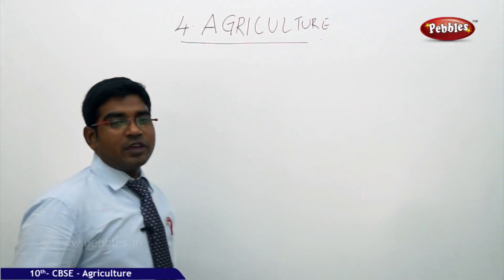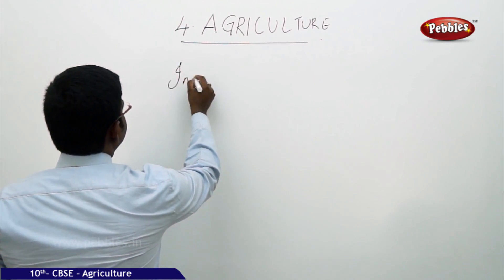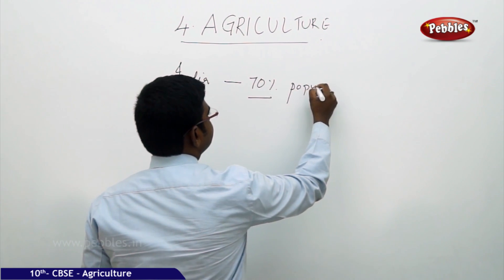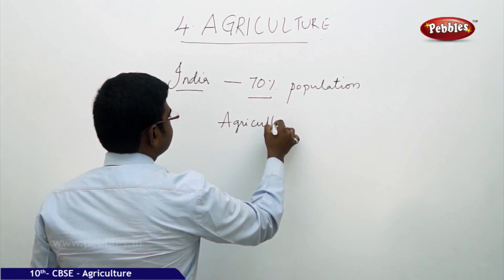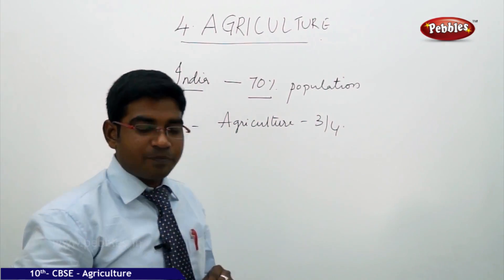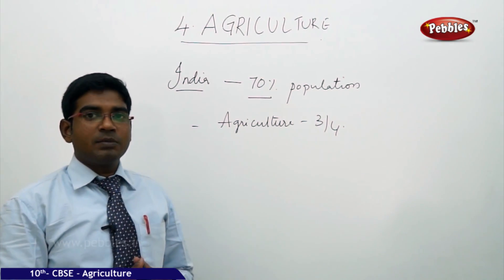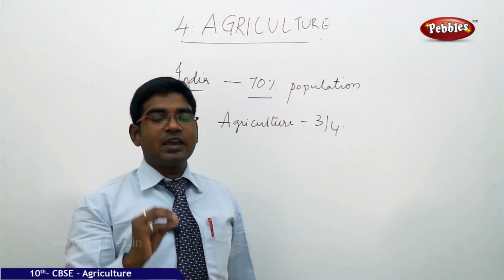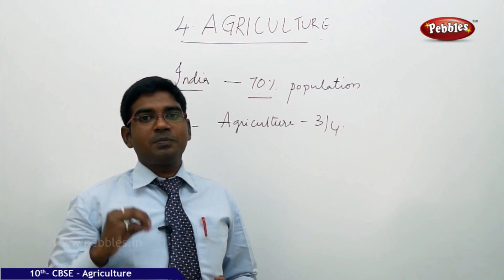Chapter 4 is about agriculture. In India, nearly 70% of the population depends on agriculture, which is nearly three-fourths of the entire population. India has been an agriculture-dominated country for many centuries because it has nearly 6.4 lakh villages, which accommodate nearly 80% of India's population. So the basic occupation for most people in India is agriculture.